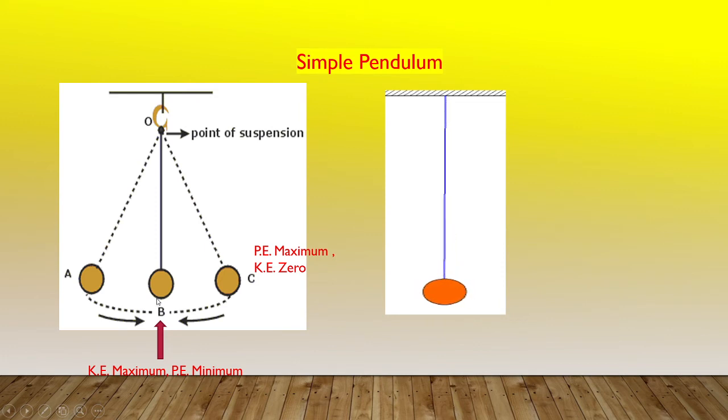As the potential energy decreases, the bob gains kinetic energy. At the mean position, the bob's kinetic energy is maximum and its potential energy is minimum.